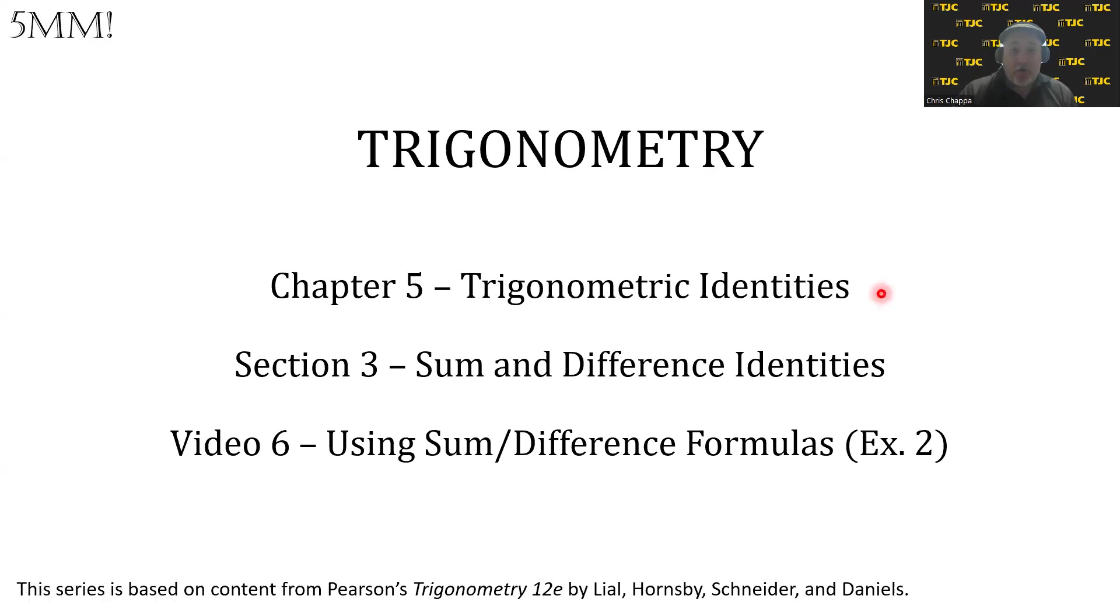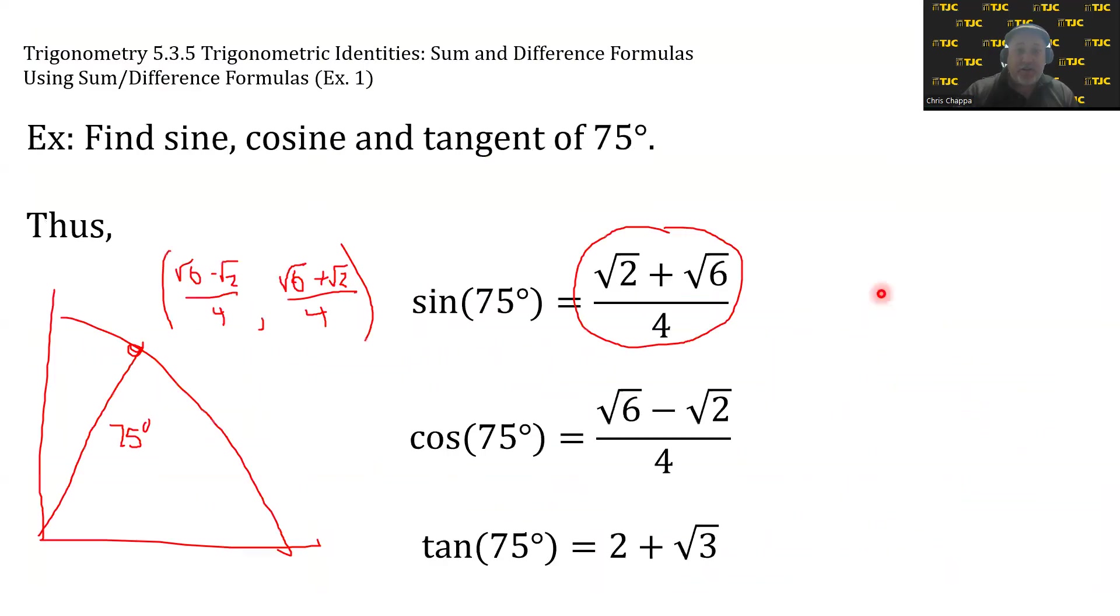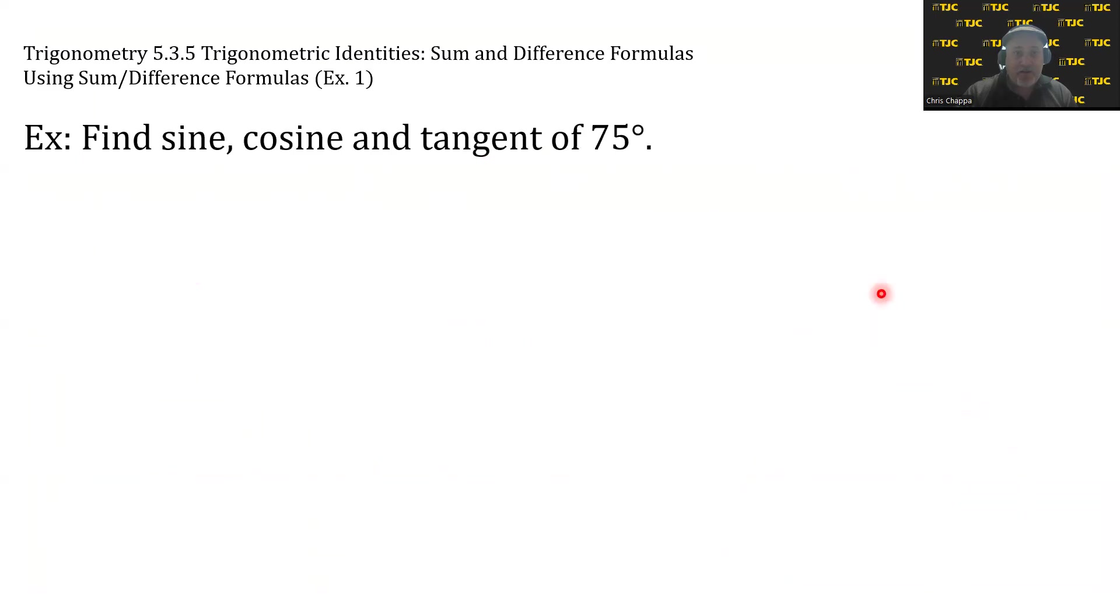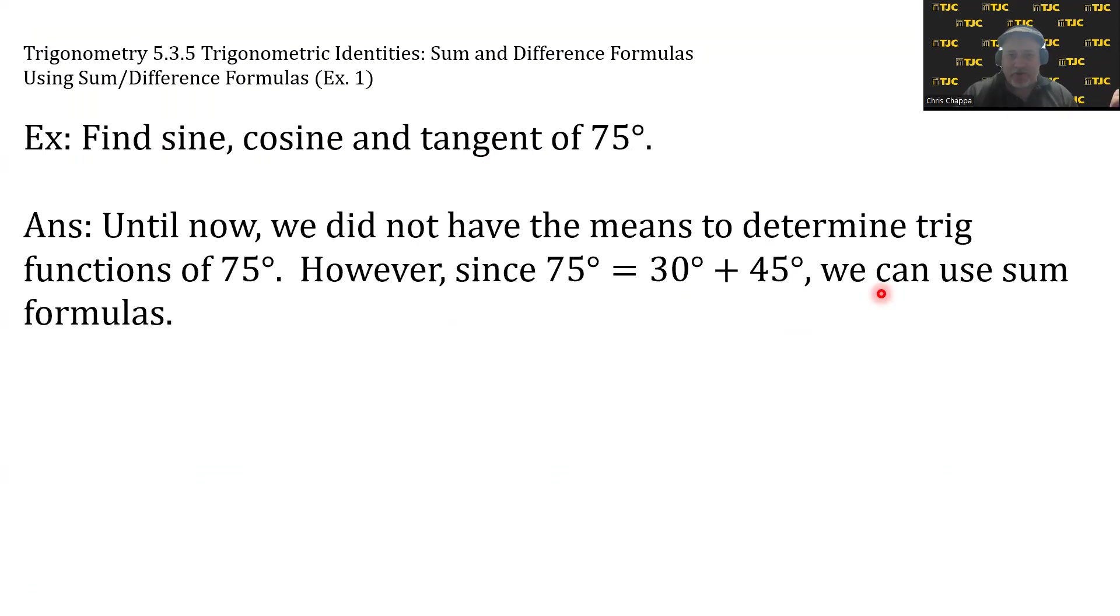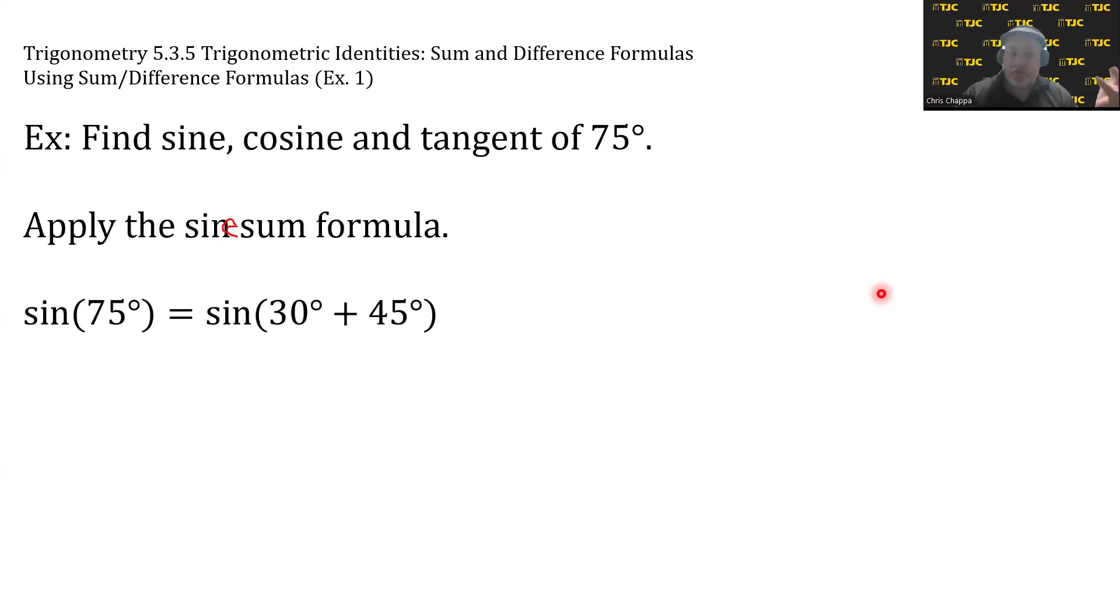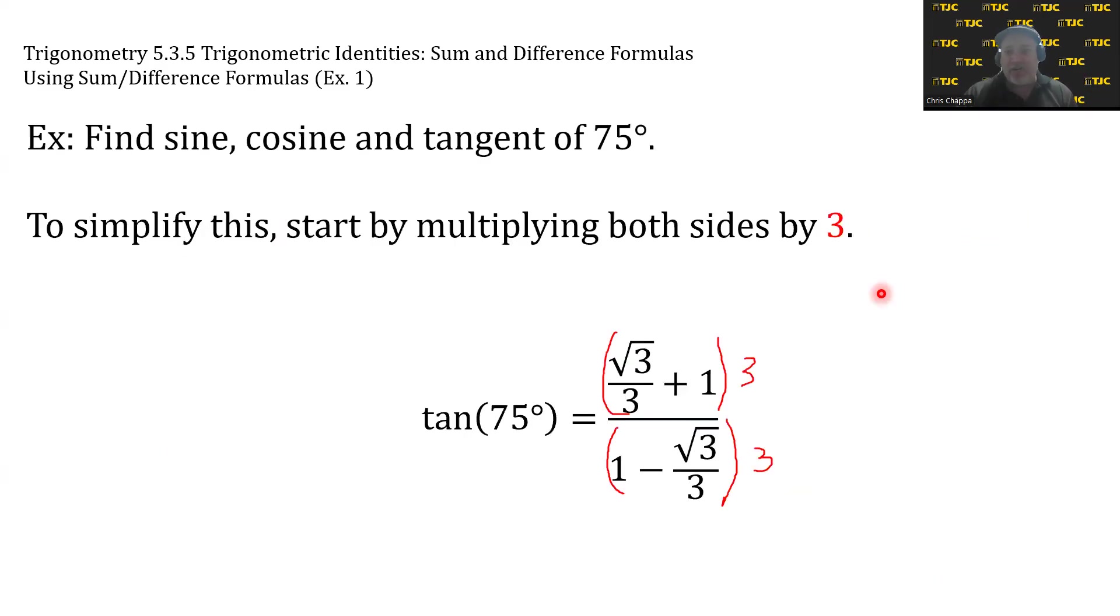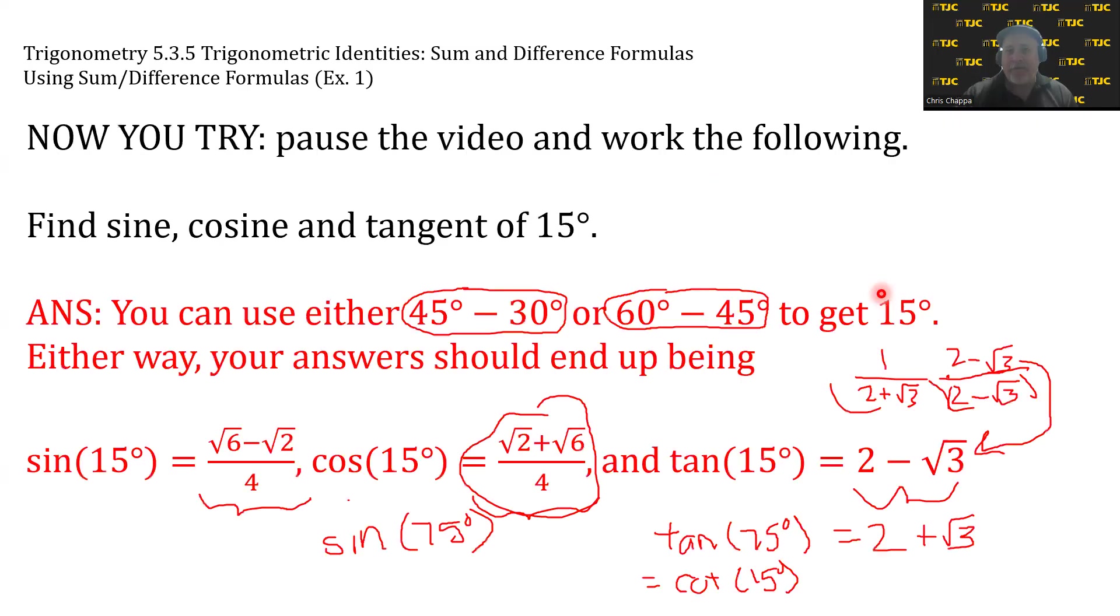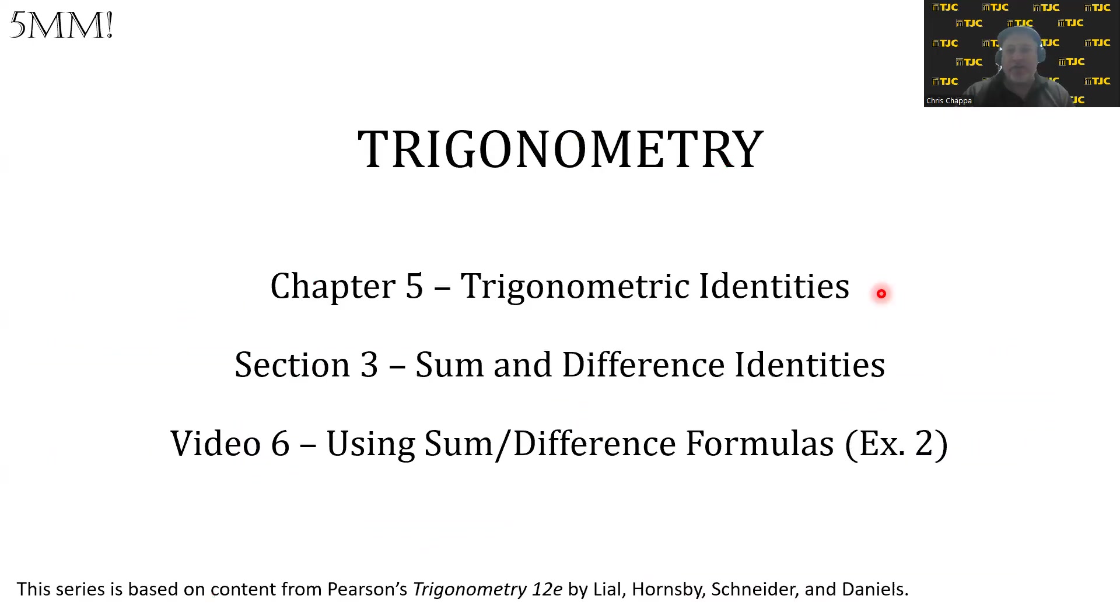In the previous video, we did some specific problems. We found cosine, sine, and tangent of 75 degrees. We went through all the song and dance, writing 75 as 30 plus 45, applied some sum formulas, and eventually got all our answers. Tangent we had to clean up quite a bit. That's one type of problem that involves sum and differences.